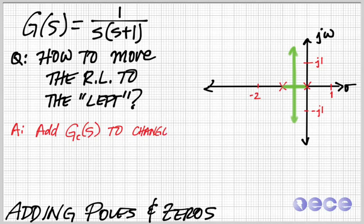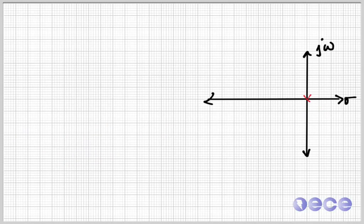Well, I choose a compensator, gc of s, or a controller, and fundamentally what I'm trying to do is move the asymptotes to the left. And I may even try to change the angles of the asymptotes based on what it is that I decide to add.